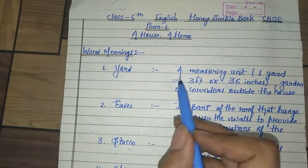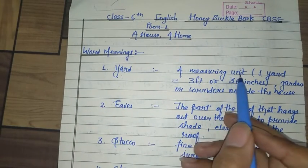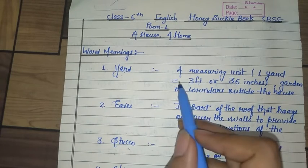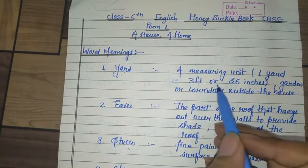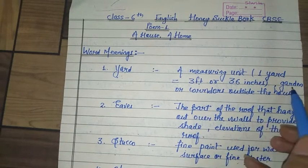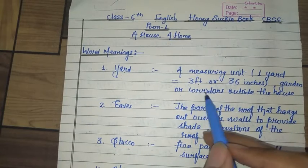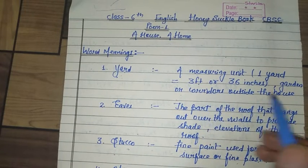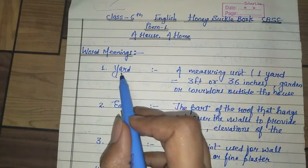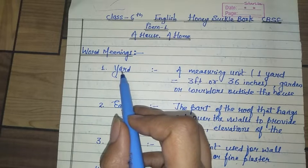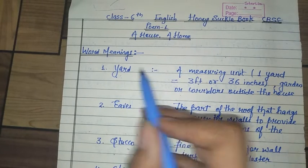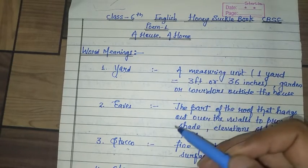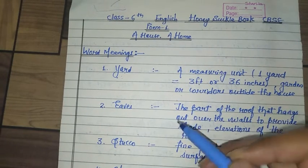Yard — a measuring unit. One yard is equal to 3 feet or 36 inches; also means garden or corridor outside the home. Yard kya hota hai? Yard matlab aangan, jo open area hota hai, usko kaha jata hai. Yeh ghar ke aage bhi hota hai aur ghar ke peechhe bhi hota hai.